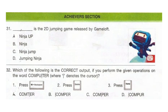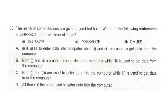When you press backspace, the cursor will go left and delete U. Then press delete, which will delete the character to the right of the cursor, that is T. Then if you press home, it will go to the starting point before C. So the answer is option B. Question 33: The names of some devices are given in jumbled form. Which of the following statements is correct about all three of them? The correct answer is option D: all three are used to enter data into the computer. The jumbled words become joystick, keyboard, and mouse — all of these are input devices.